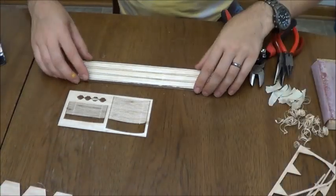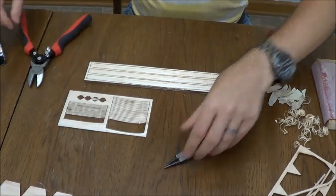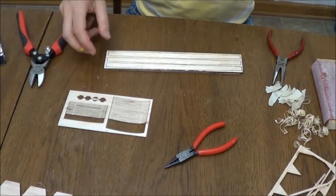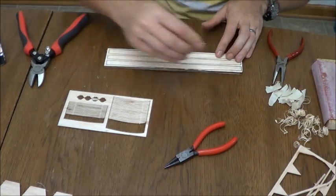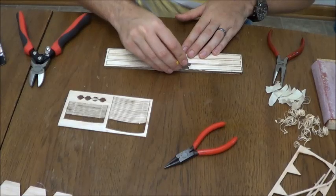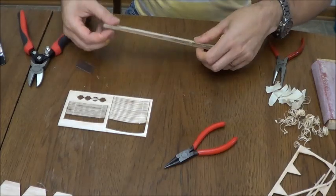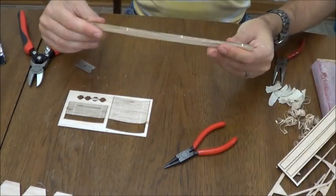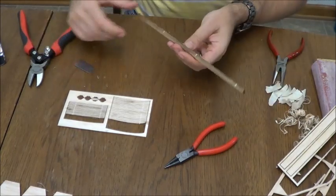All right, the next thing we're going to work on is assembling our fuselage. So you're going to cut out one of these motor sticks like so. This should pop straight out. These are made from a fairly soft light balsa, very beefy material though.